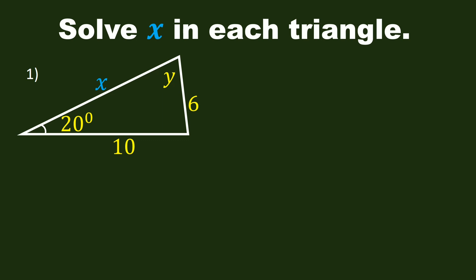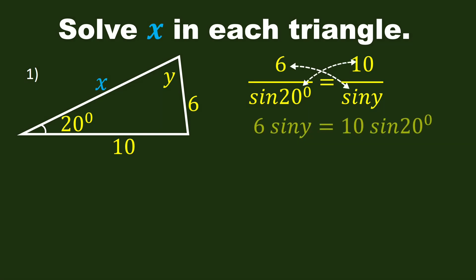Now, we use law of sines to find Y. We have 6 over sine 20 degrees is equal to 10 over sine Y. By cross-multiplying, we have 6 sine Y is equal to 10 sine 20 degrees.